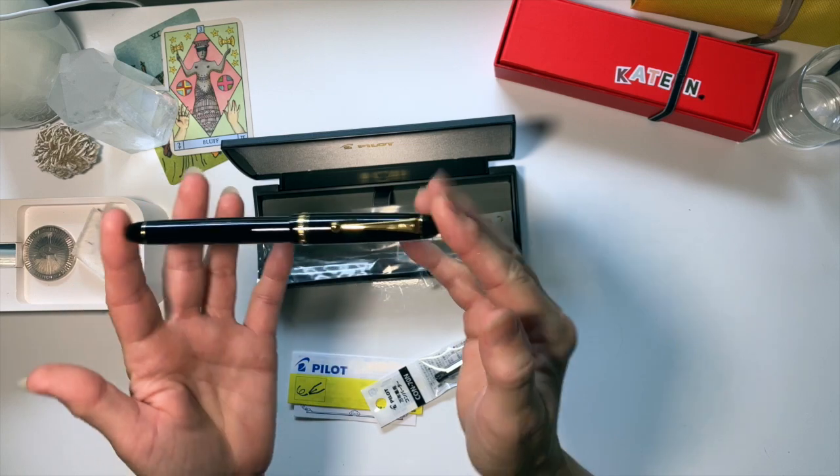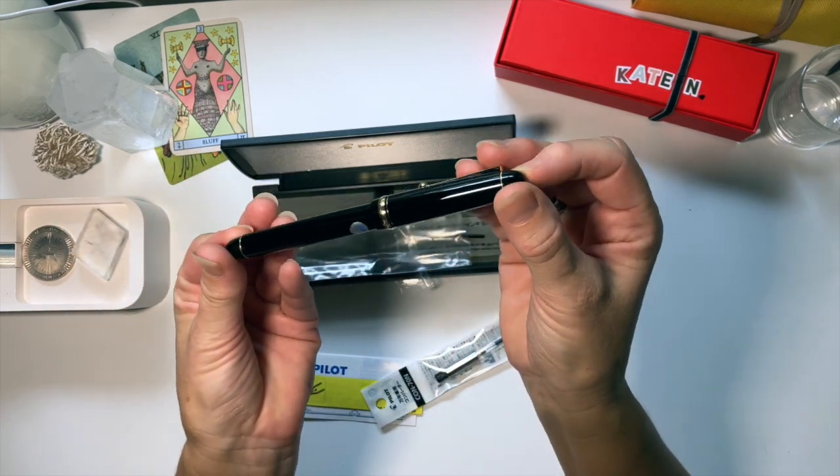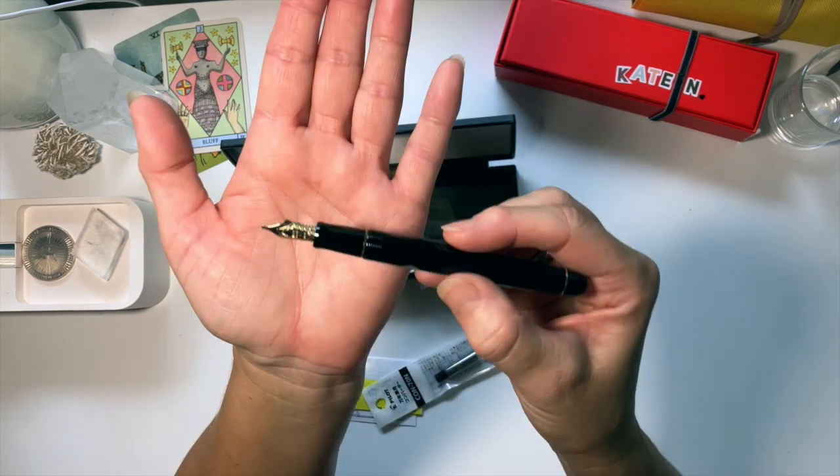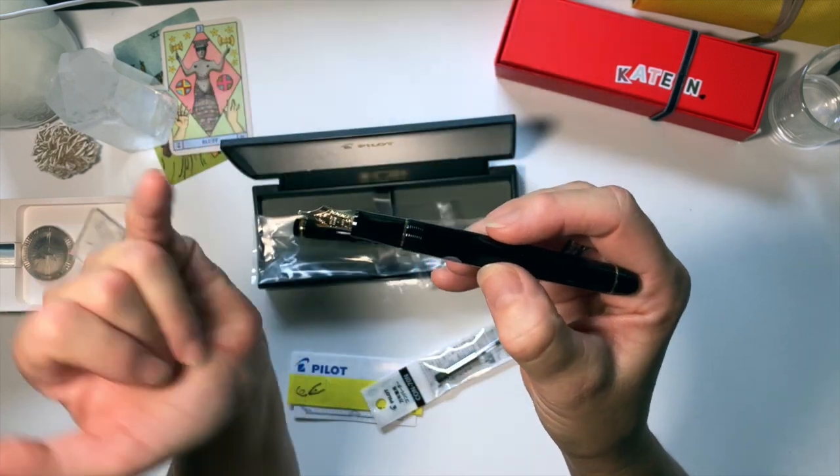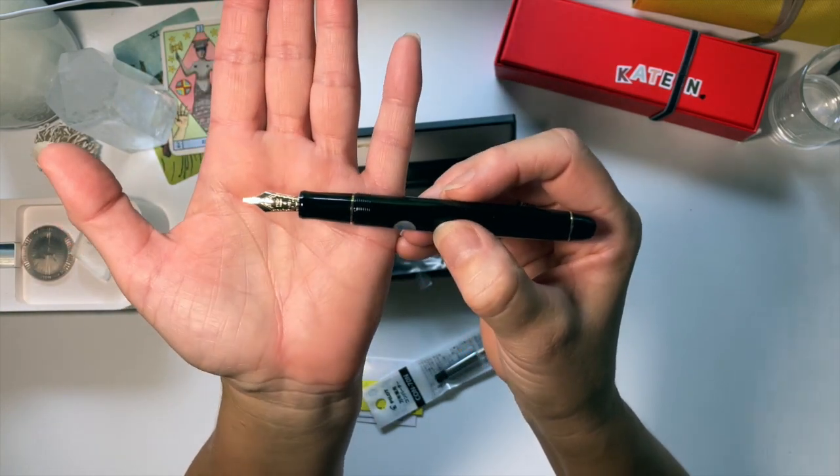But this is actually absolutely gorgeous. It's got a gold nib and it is a music nib. So what a music nib is, it's a stub nib and I am so interested to try a stub nib.